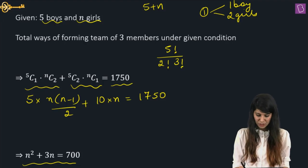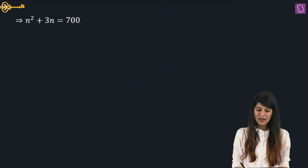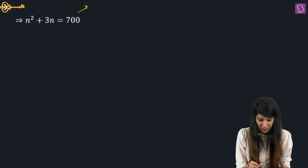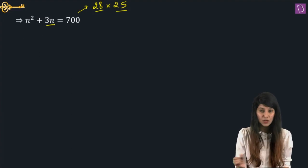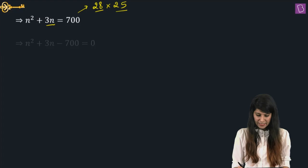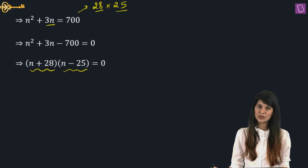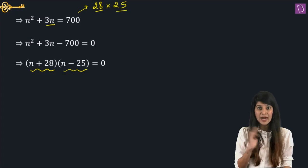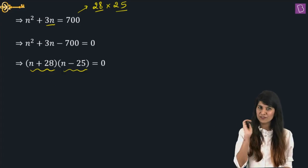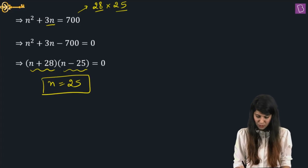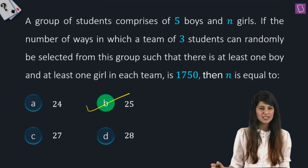We solve the quadratic equation N² + 3N = 700. Splitting 700 into 28 × 25, where the difference is 3: (N + 28)(N − 25) = 0, giving N = −28 (rejected, N cannot be negative) or N = 25. So the number of girls is 25, which is option B.